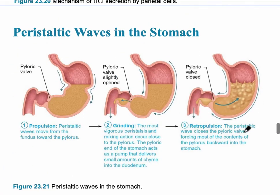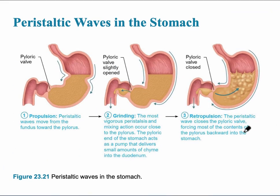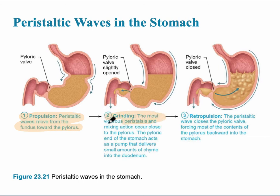Peristaltic waves are now occurring in the stomach — these are the alternating contractions. Peristalsis moves from the fundus, the top part of the stomach, towards the pylorus. Then grinding occurs, which is a more vigorous peristalsis mixing activity. After that, retropulsion occurs, where the chyme is moved backwards to further break it up.